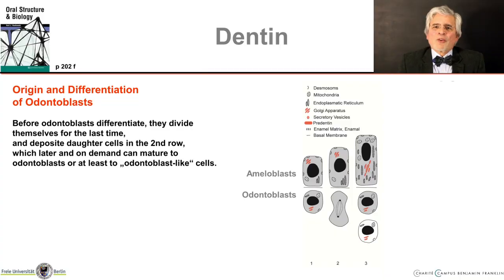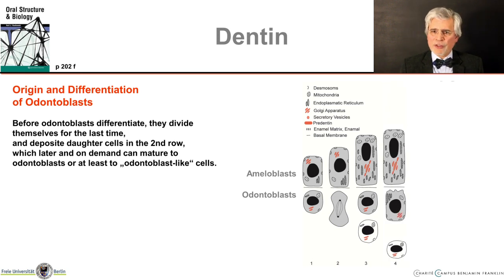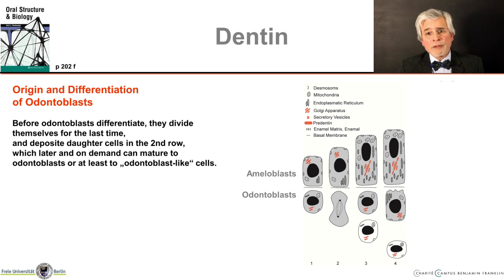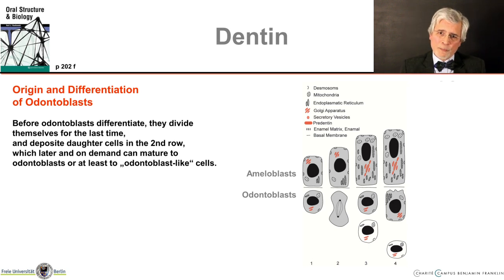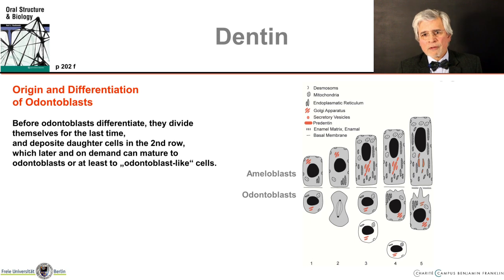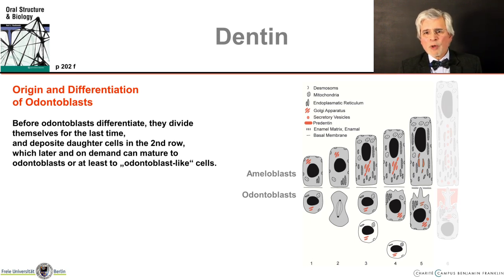Similar to what the ameloblasts have done, the odontoblasts prepare for the production of a dentine matrix. For this purpose, the organelles required for this multiply in the cytoplasm. We see a rough endoplasmatic reticulum with its many ribosomes — the small black dots — as a protein synthesis factory. And the odontoblast therefore also becomes longer and forms extensions — not just one, but several. But the one in the middle becomes the longest; the others lag behind in their development.